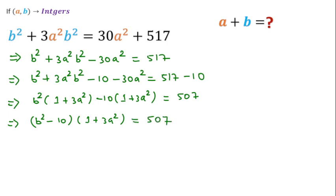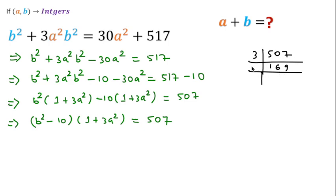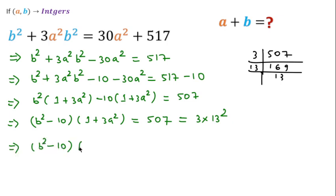Now we can write 507 in factored form. If we divide 507 by 3, we get 169. If we divide 169 by 13, we get 13. So 507 = 3 × 13², and we have (b² − 10)·(1 + 3a²) = 3 × 13².